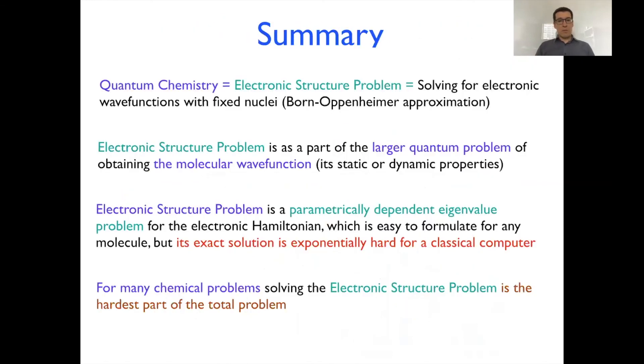To summarize, essentially quantum chemistry, by many, what quantum chemistry means is electronic structure problem. And that problem is solving for electronic wave functions with fixed nuclei, essentially Born-Oppenheimer approximation.